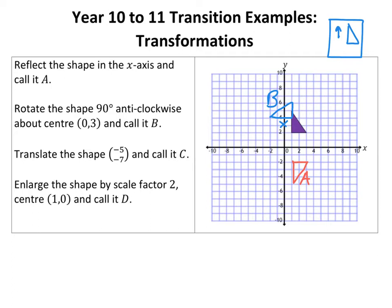Now translate the shape (-5, -7) and call it C. So I'm going to pick a point. It's going to go minus five, that's five to the left, and seven down. So we're going to go one, two, three, four, five and one, two, three, four, five, six, seven. That's that point.